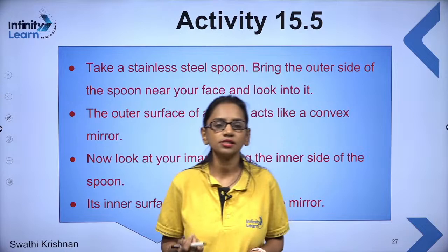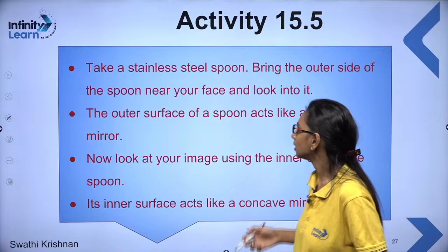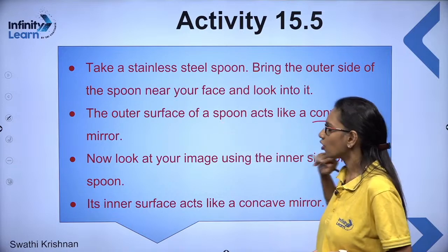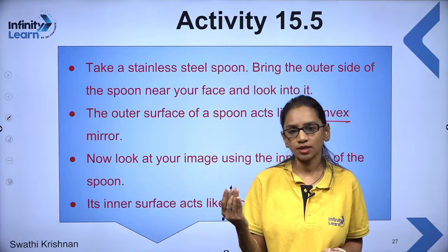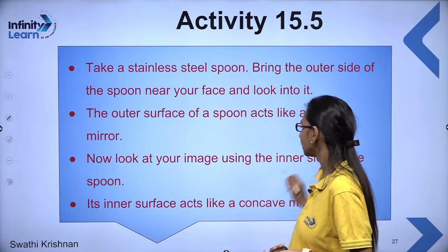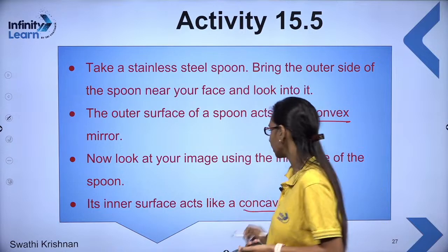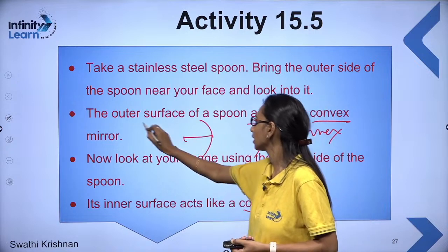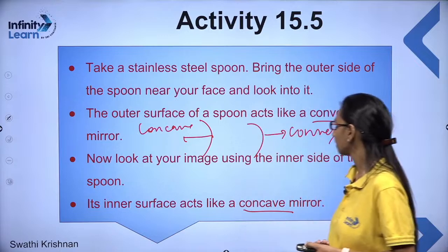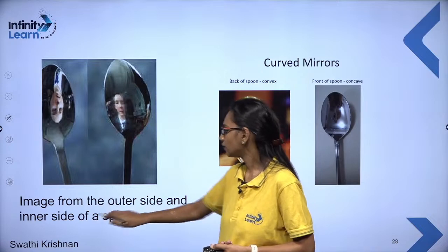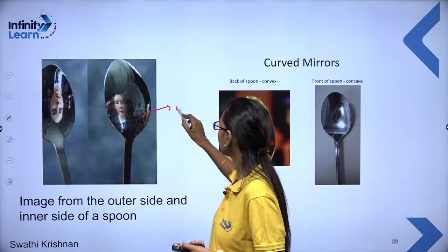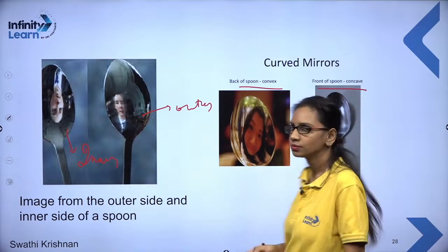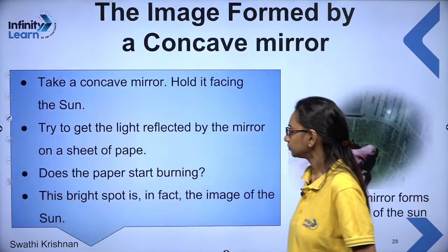Here is a small activity: take a stainless spoon, bring the outer side near your face and look into it — the outer surface acts as a convex mirror. Now look at the image using the inner portion — that acts as a concave mirror. The back of the spoon is convex and the front of the spoon acts like a concave mirror.